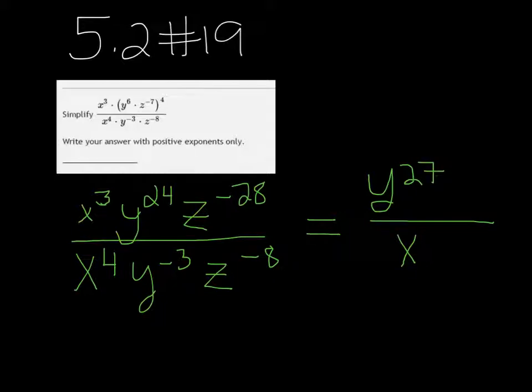Negative 28 minus a negative 8 would be negative 28 plus 8, so that would be negative 20, putting z in the bottom with a power of 20.